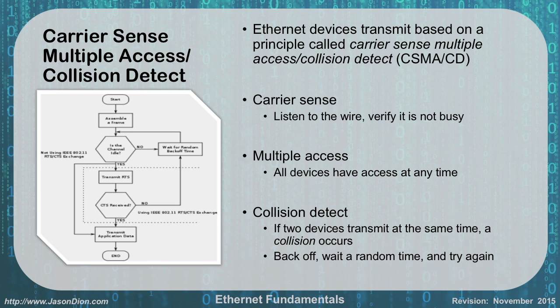To compensate for the lack of order, Ethernet uses Carrier Sense Multiple Access Collision Detection — CSMA/CD. Carrier Sense means it listens to the wire first to verify whether it's busy. If it doesn't hear anything, it tries to access it. Multiple Access means many devices can attempt this at the same time. But if too many do, they'll have a collision. Collision Detection means the device can determine if it stepped on someone else's transmission. If two devices transmit simultaneously, a collision occurs — they back off, wait a random amount of time, and then try again.